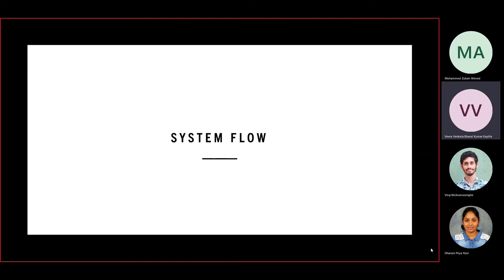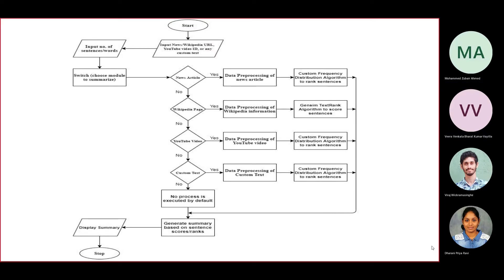Now let's see the system flow. We start with inputting the news or Wikipedia URL, YouTube video ID, or custom input. If we give any particular input, for example a news article URL, the data is preprocessed accordingly.